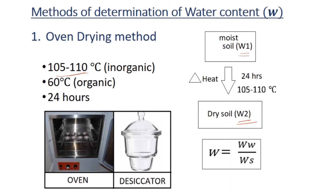The equation is the weight of water divided by the weight of solids. The weight of water is the difference W1 minus W2. The weight of solids is the dry condition of the sample, which is W2. So moisture content equals (W1 - W2) divided by W2.